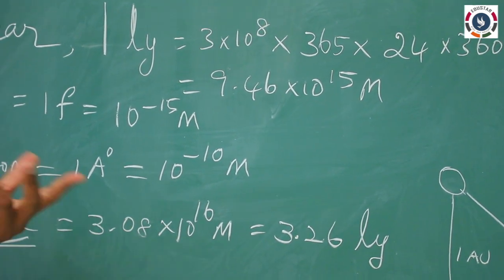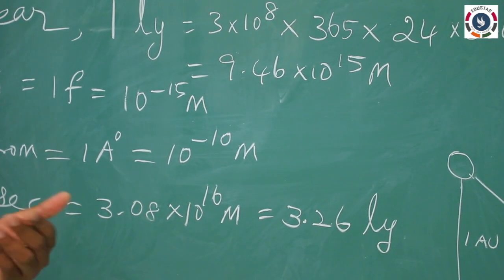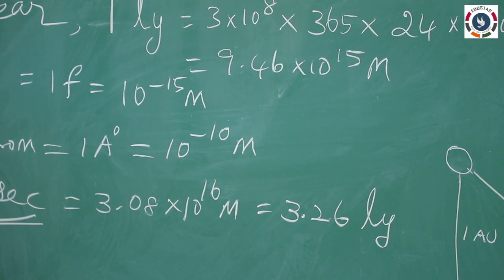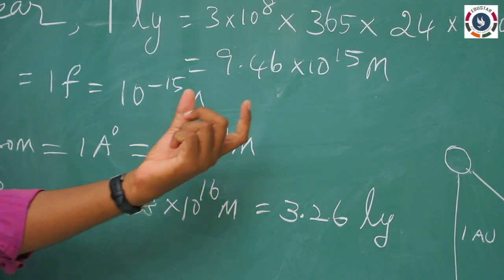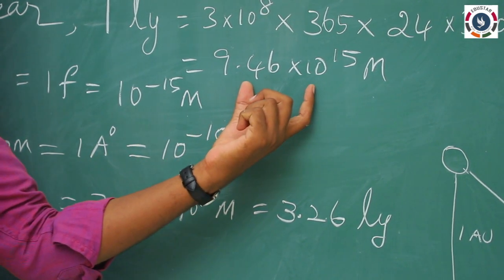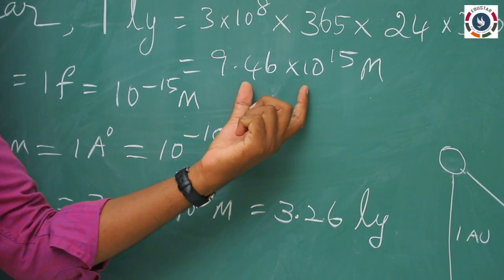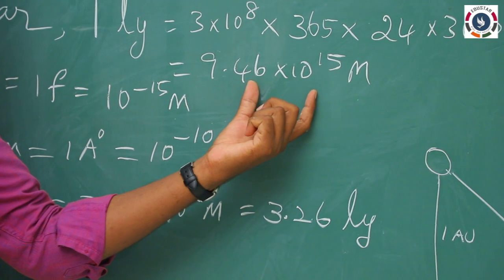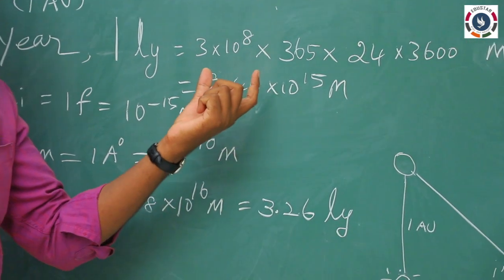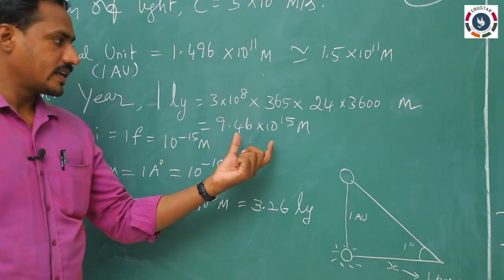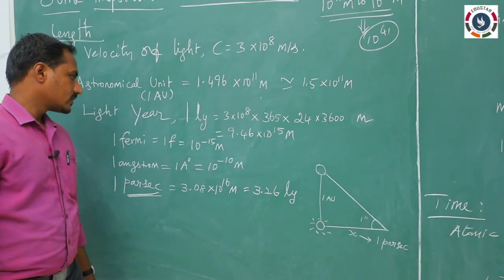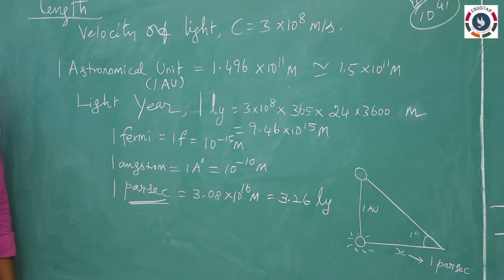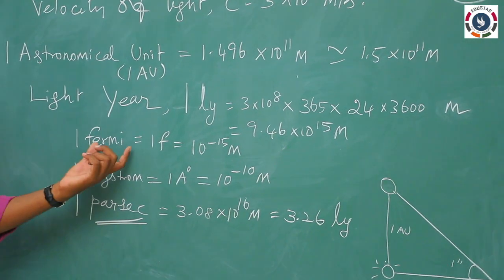If light travels in the universe continuously, it covers a distance of 9.46×10¹⁵ meter in 1 year. That is called the light year.